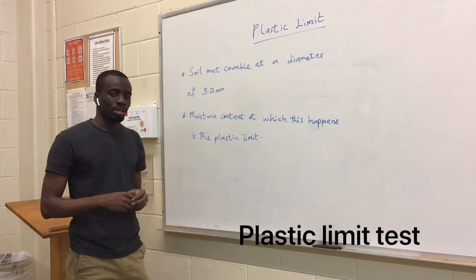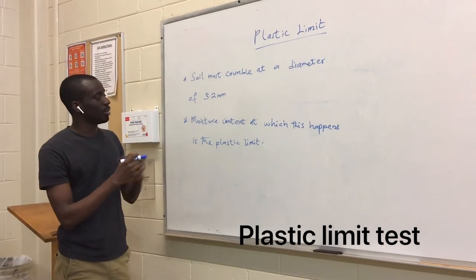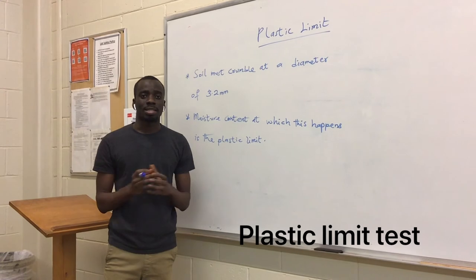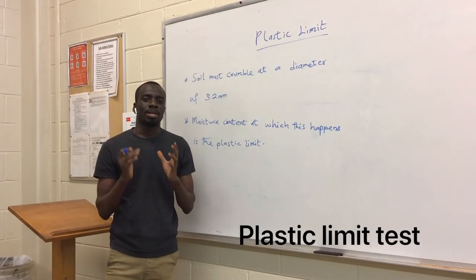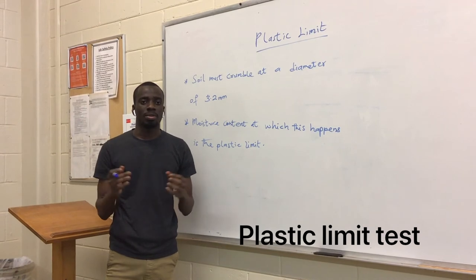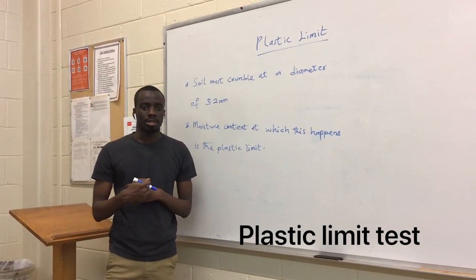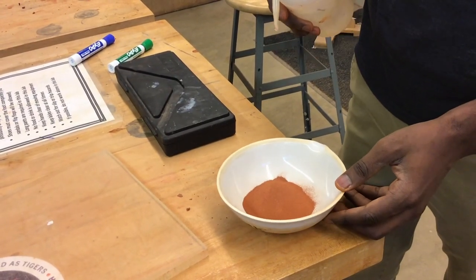We are moving on to the plastic limit test. What we do is roll an ellipsoidal size soil mass on a glass plate and you measure the moisture content at which it crumbles at a diameter of 3.2 millimeters and that becomes the plastic limit. Now I'm going to add water to this soil sample and mix it.